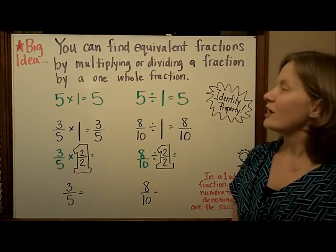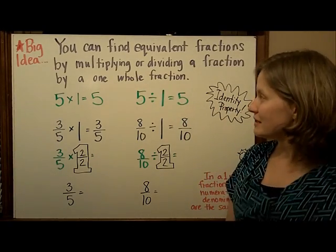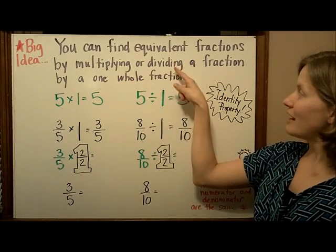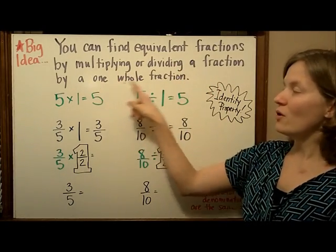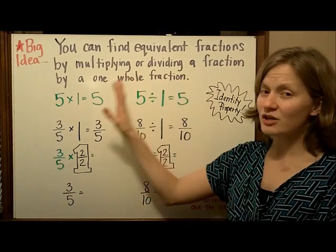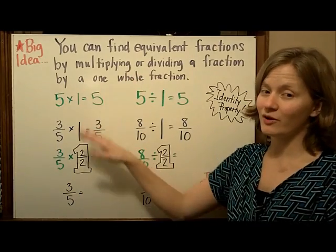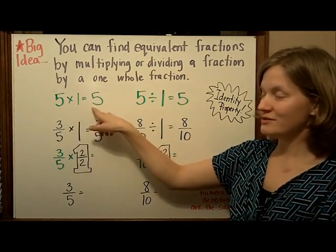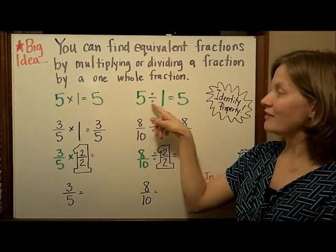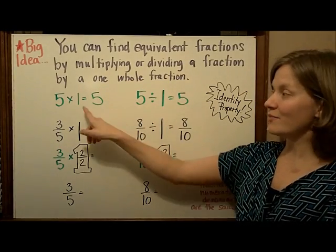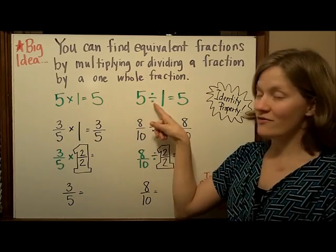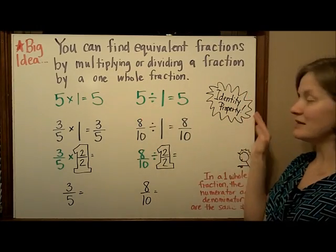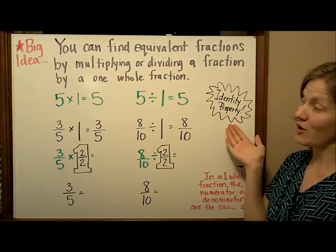When we're talking about equivalent fractions, the big idea is that you can find equivalent fractions by multiplying or dividing a fraction by a one-whole fraction. We know that five times one is five, and five divided by one is five. Any number multiplied by one or divided by one is going to stay the same number, and that is the definition of the identity property.